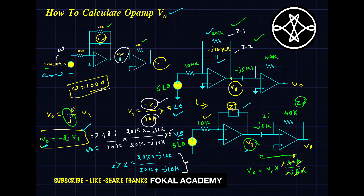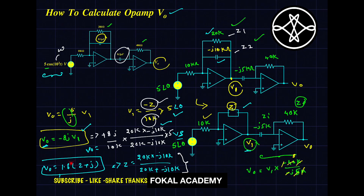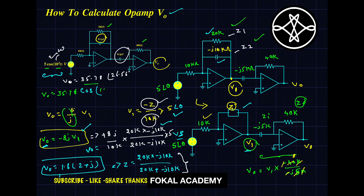The result is V0 = 1.6(2 + j), and after simplification in phasor form: V0 = 35.78∠26.56°. Since the input is a cosine signal, the output is written as: V0 = 35.78·cos(1000t + 26.56°). This is the required output voltage for the given problem. Thanks for watching — please subscribe, like, and share.